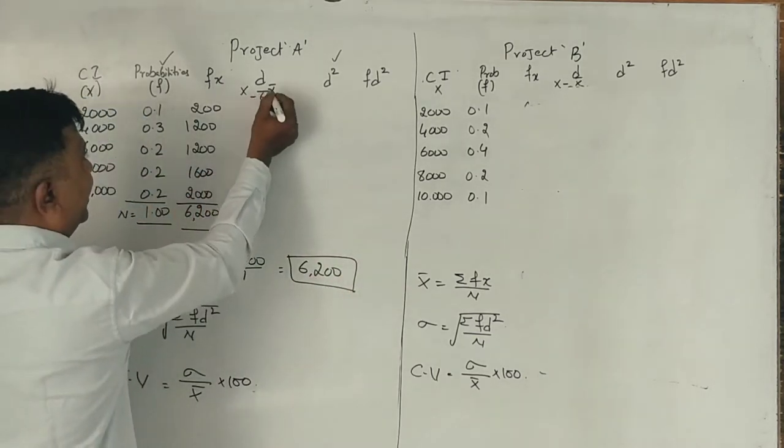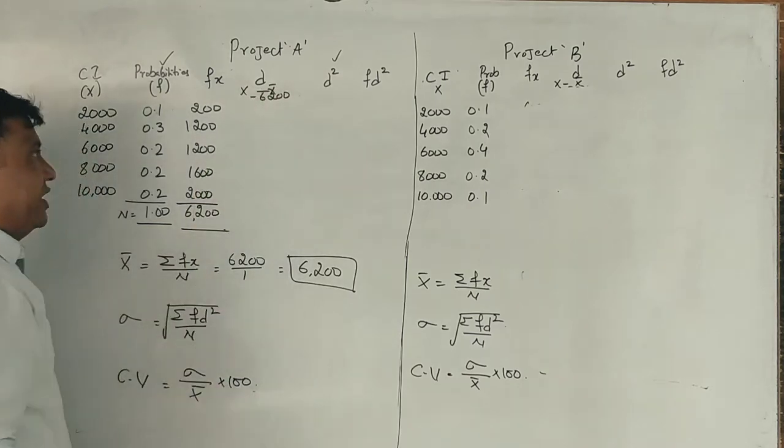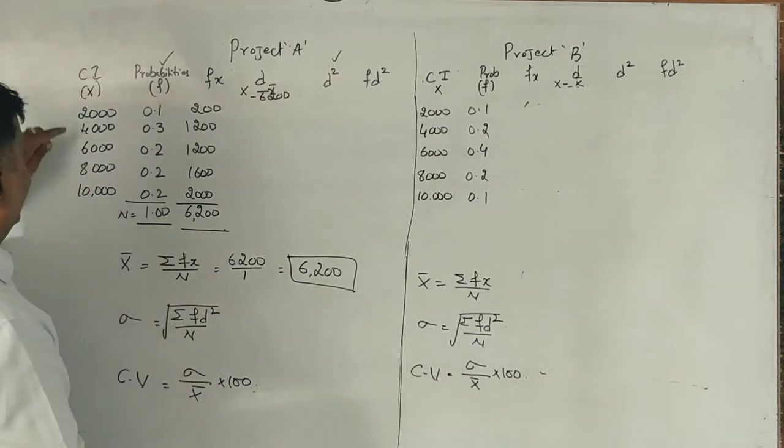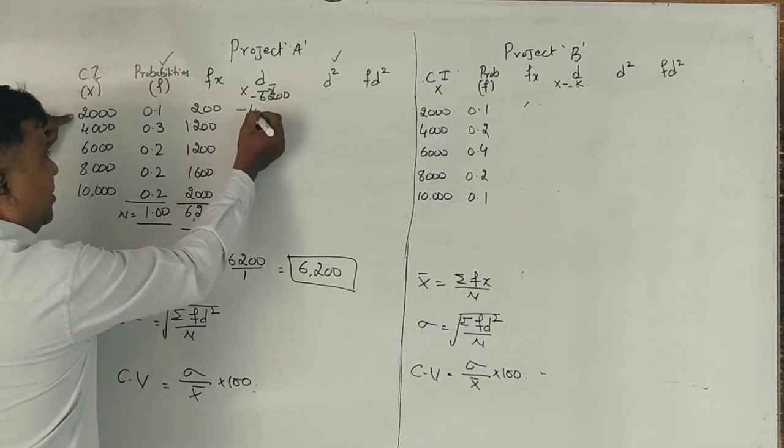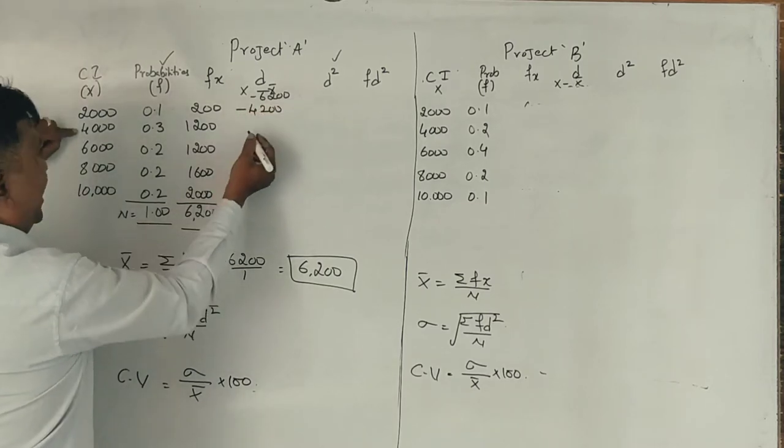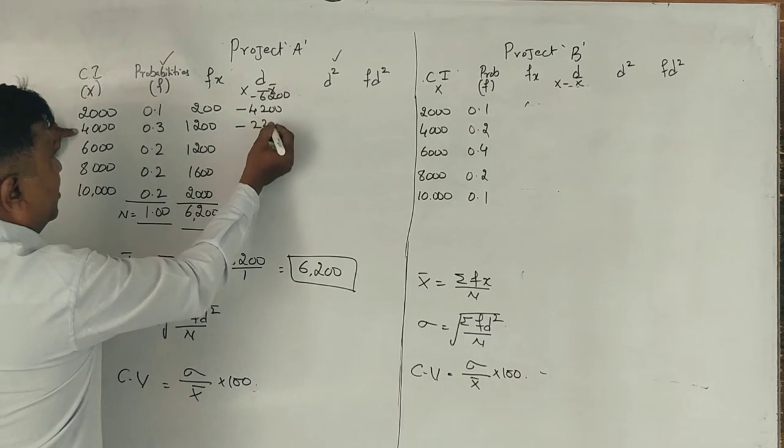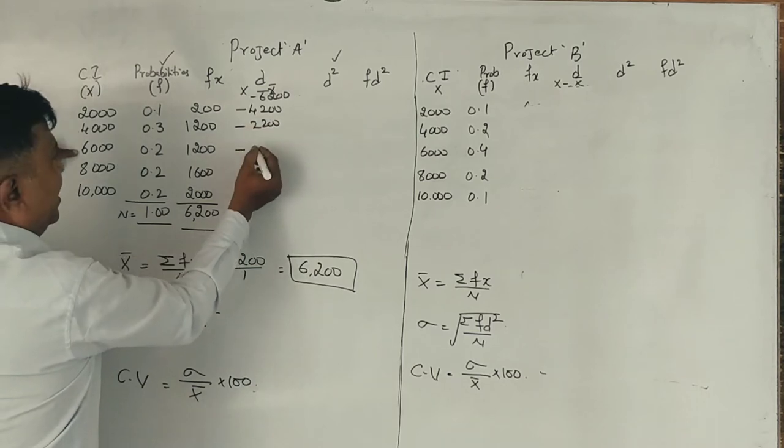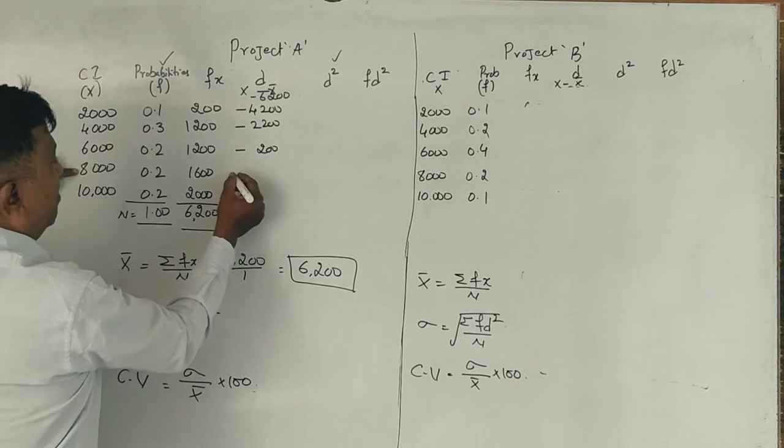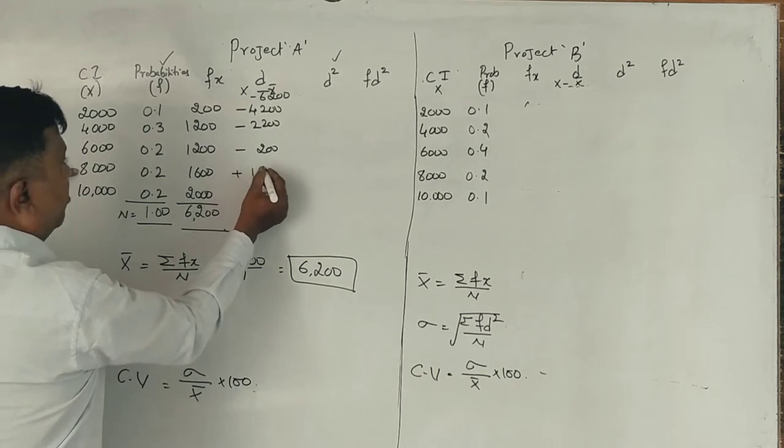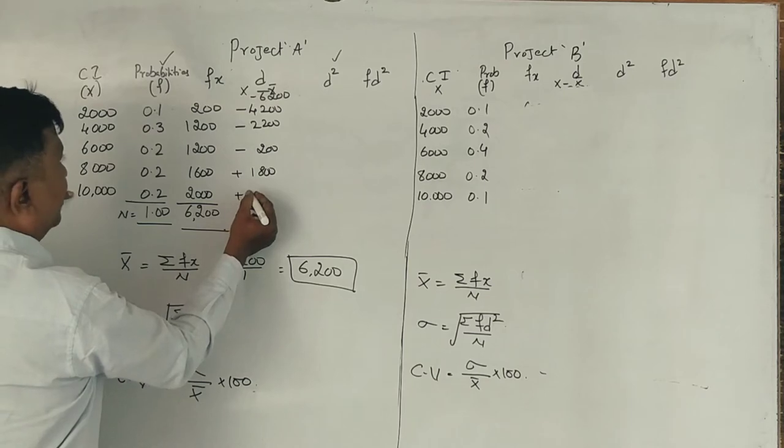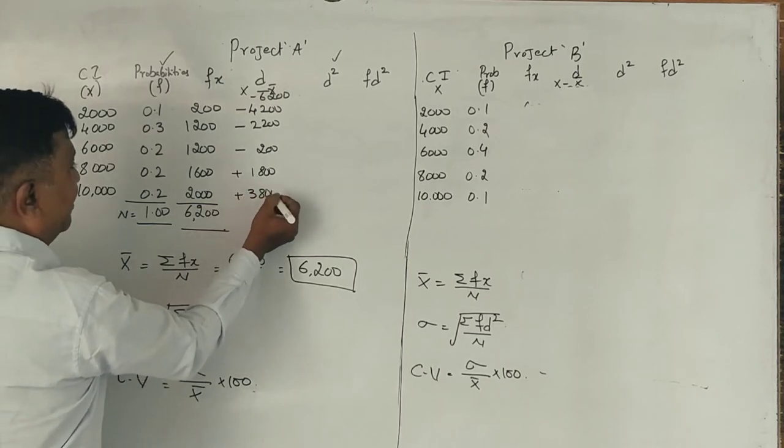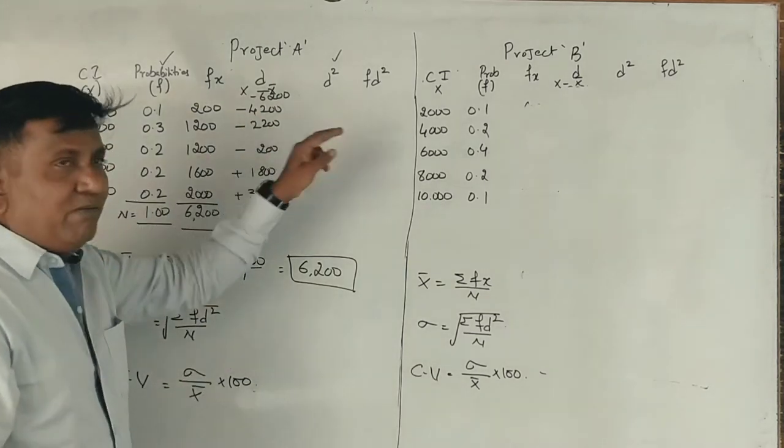Now we find x minus mean: 4,200 minus, 2,200 minus, 200 minus, plus 1,800 plus 3,800. Now we square these values.